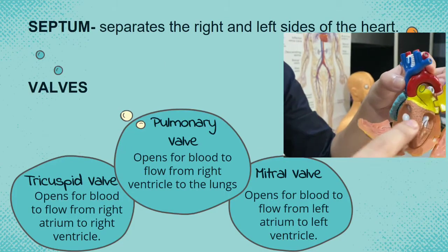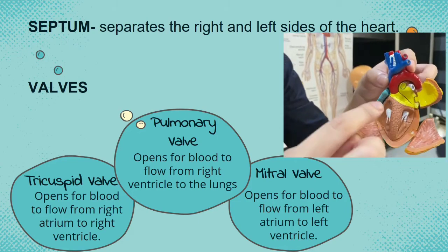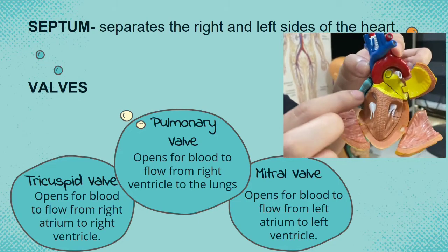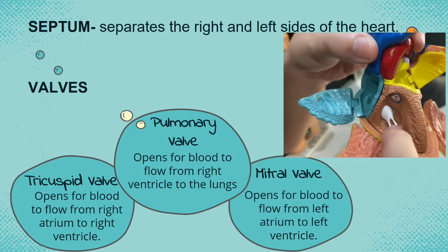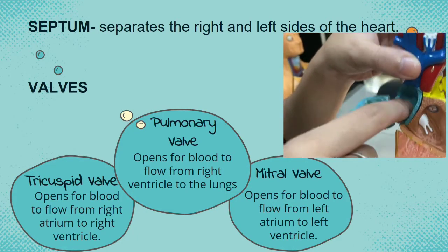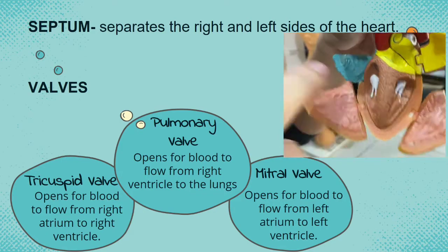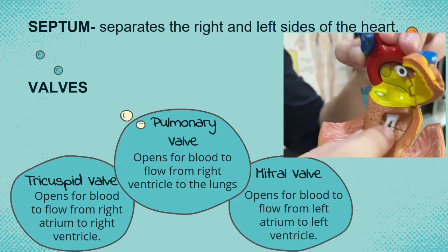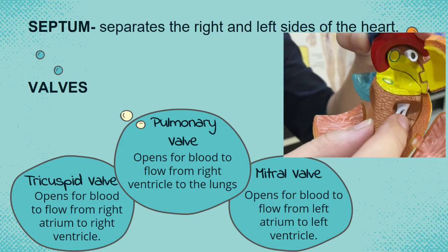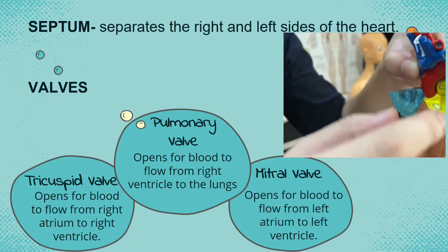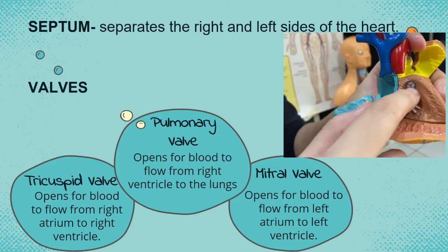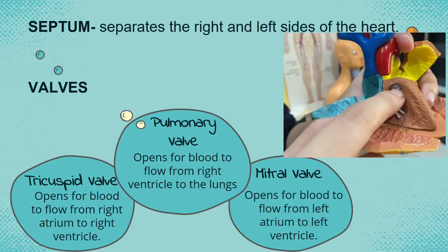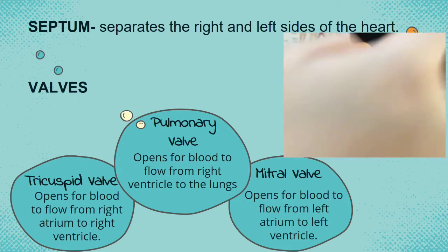This is our septum. It separates the right and left sides of the heart. The tricuspid valve opens for blood to flow from the right atrium to the right ventricle. The mitral valve opens for blood to flow from the left atrium to the left ventricle. And lastly, the pulmonary valve opens for blood to flow from the right ventricle up to the lungs. That's it for the parts of the heart.